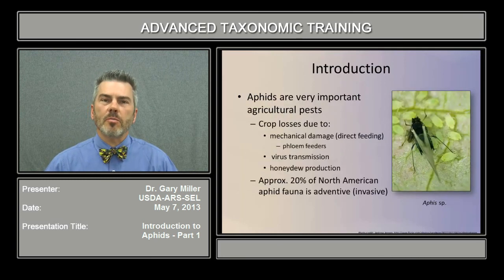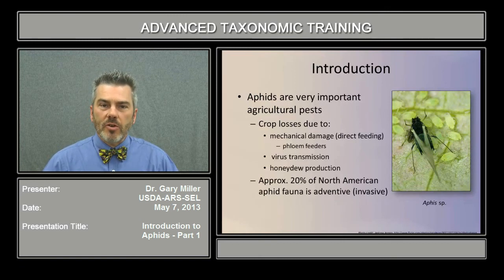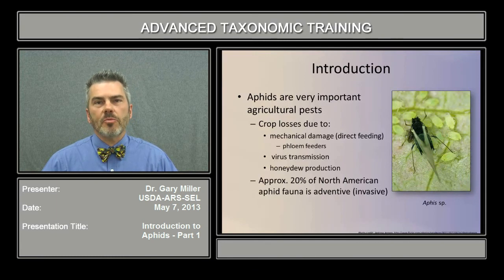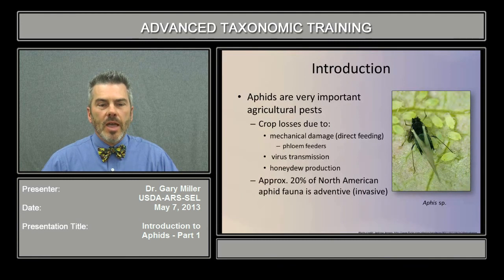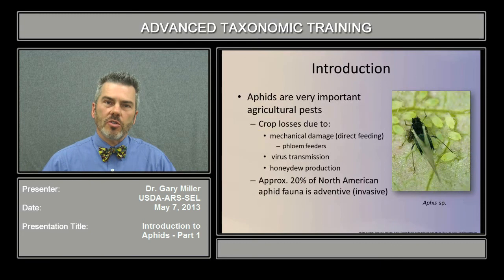Aphids are very important agricultural pests, basically for three main reasons. First, due to their mechanical damage, that is, direct feeding — aphids are phloem feeders. They're also very important in virus transmission, that is, plant virus diseases. And they also produce honeydew, which is a carbohydrate water composition. This is important because it reduces photosynthesis of the plant once it's on the plant, and makes the fruit unmarketable.